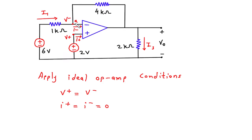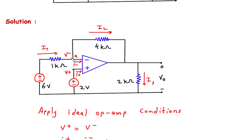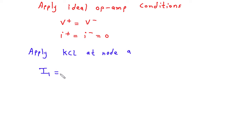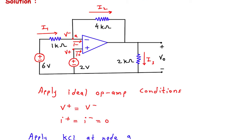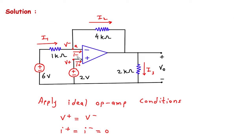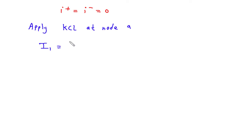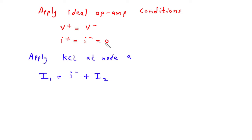Now we will apply KCL at node A. According to KCL — Kirchhoff's current law — the summation of all currents entering a node equals the summation of all currents leaving the node. At node A, the entering current is I1, and the leaving currents are I- and I2. Since I- = 0, therefore I1 = I2.